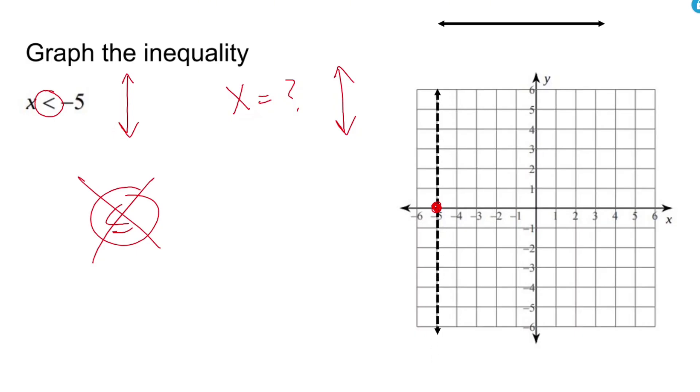Now, the other thing that you look at when you graph an inequality is the symbol, and that tells you which side you need to shade. I have x is less than negative 5, which means I'm going to shade everything to the left of negative 5 because it's to the left of negative 5. That's what the less than means.